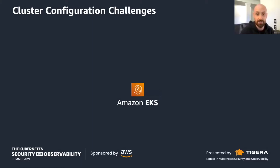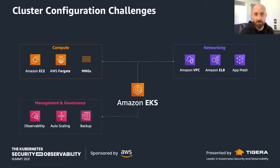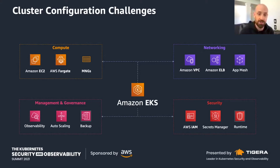If you think about this in the context of leveraging EKS, you get some great benefits out of the box. It automatically manages the availability and scalability of the Kubernetes control plane — scheduling containers, managing application availability, storing data. But when it comes to the dimensions you have choices to make: compute — do you want EC2, EKS Fargate, or managed node groups? From a security perspective, you're thinking about IAM permissions, how to manage secrets, how to externalize them to the cluster, and what you'll do to detect malicious activity inside your cluster for runtime security.